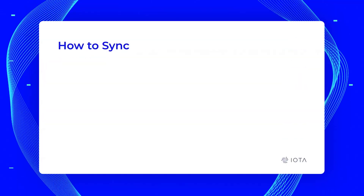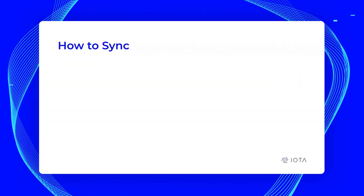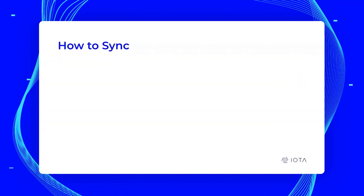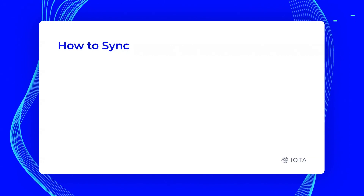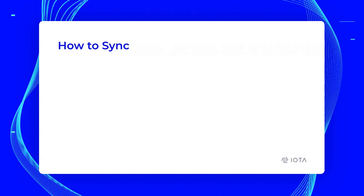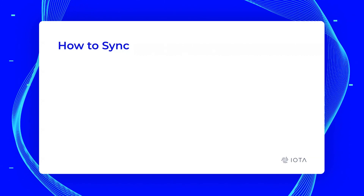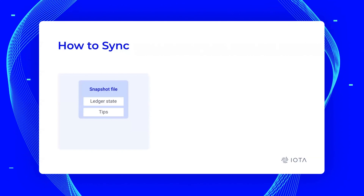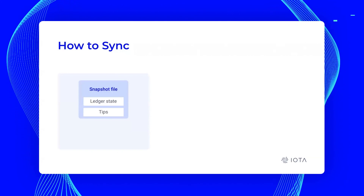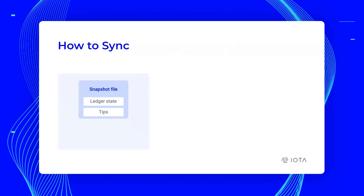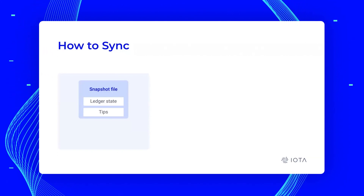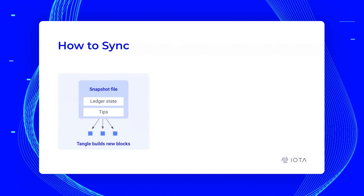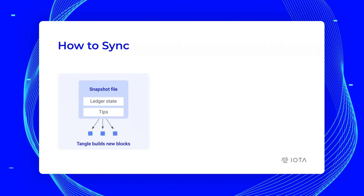How to sync — this is the cornerstone of DLT theory. When a new node joins the network, it wants to know what is the ledger state. So it downloads a snapshot file, which contains tips, and from here builds a new tangle.